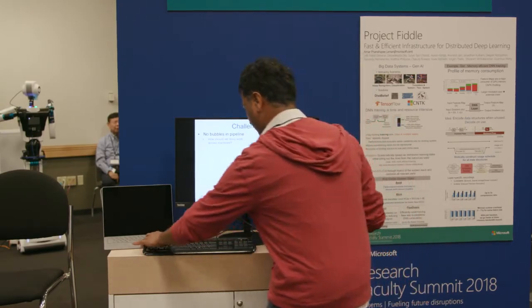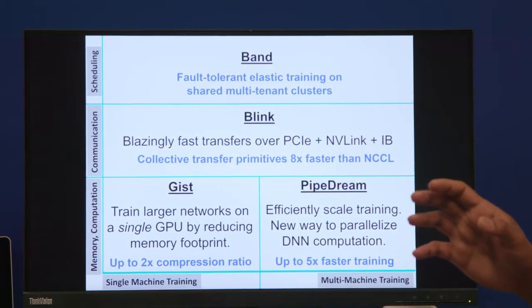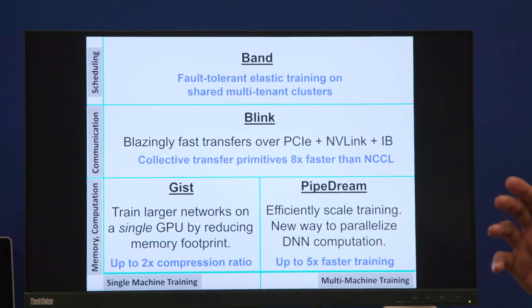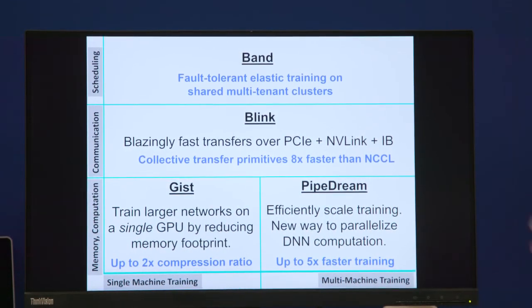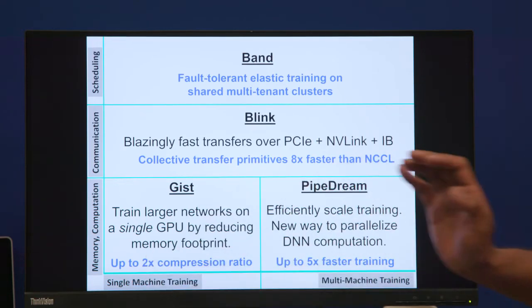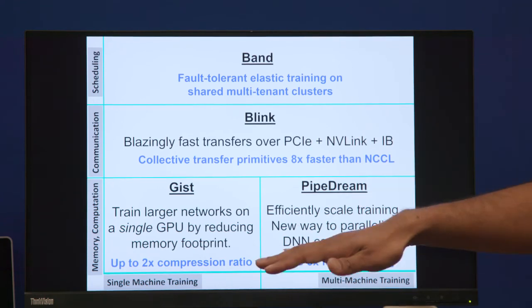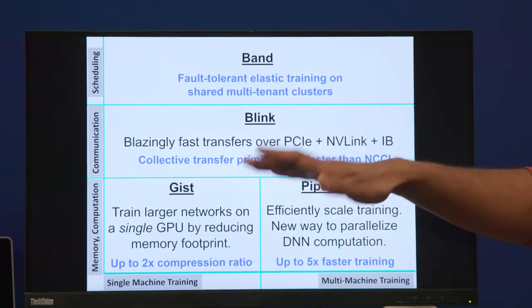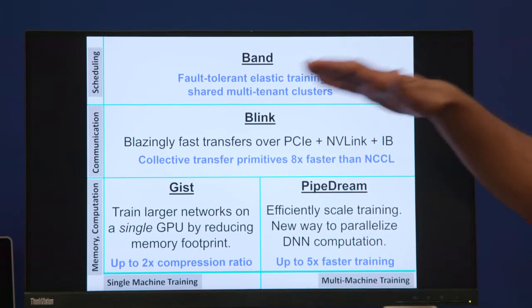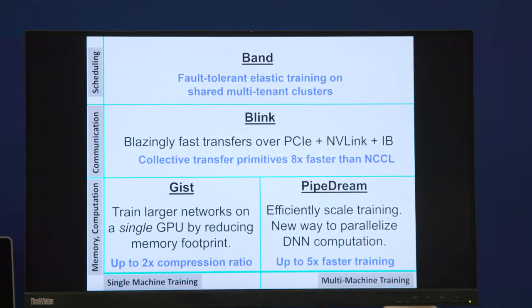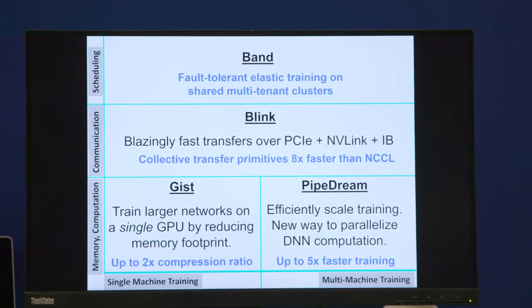So, to wrap things up. In Project Fiddle, we are building, we're doing systems research to speed up DNN training. And we take a broader view of training from single GPUs to multiple GPU, multiple machine setup. And we cut across the system stack from the memory subsystem, to how to structure computation automatically, to communication that's inherent in this training paradigm, all the way up to fault tolerant elastic training on shared multi-tenant clusters. Thanks.